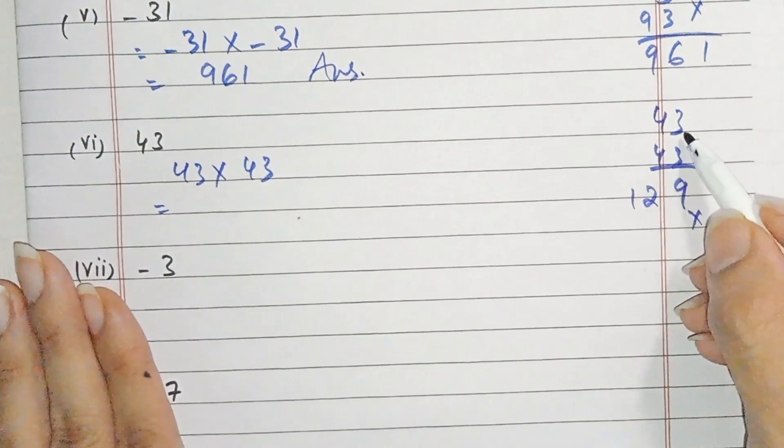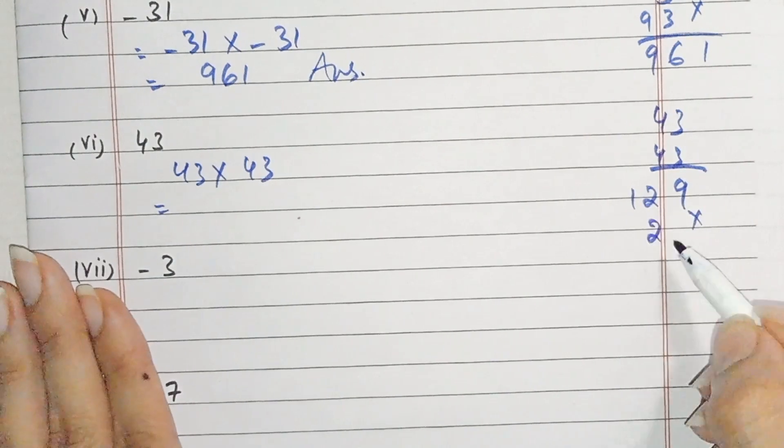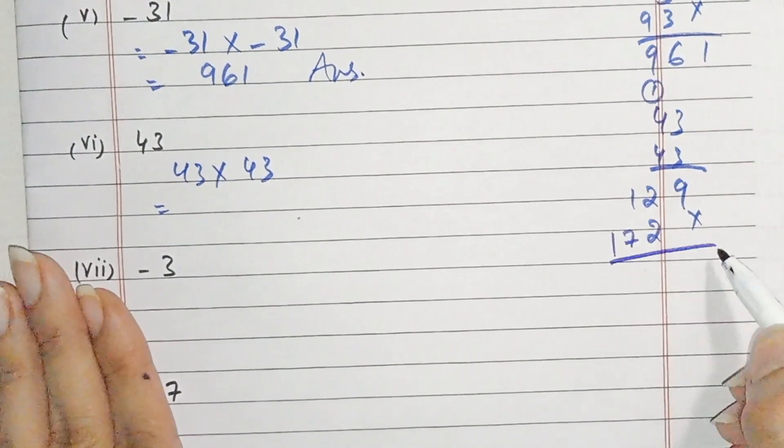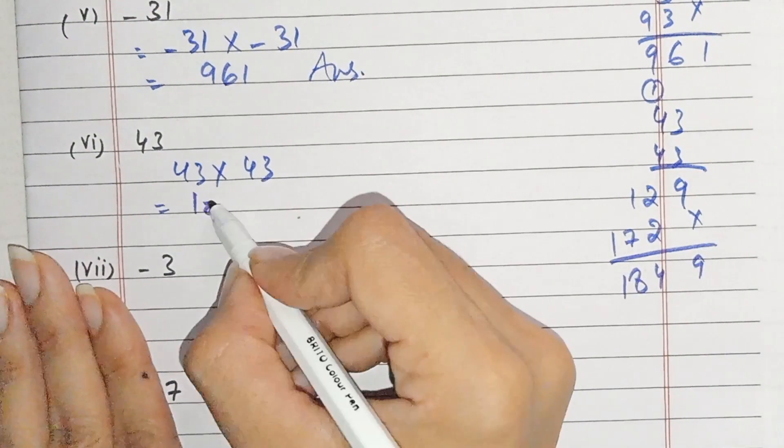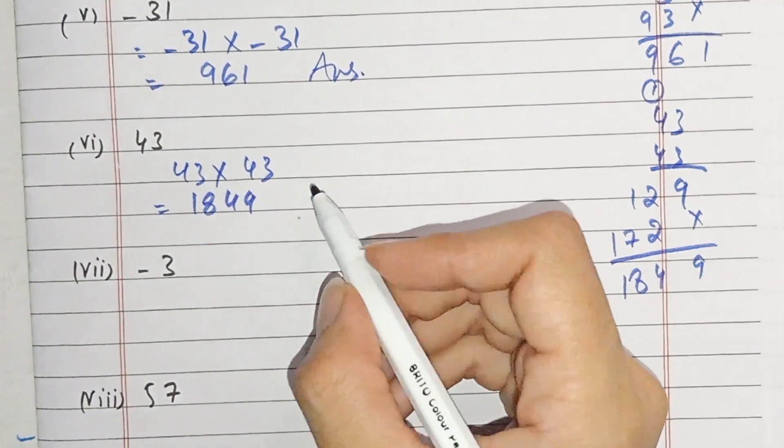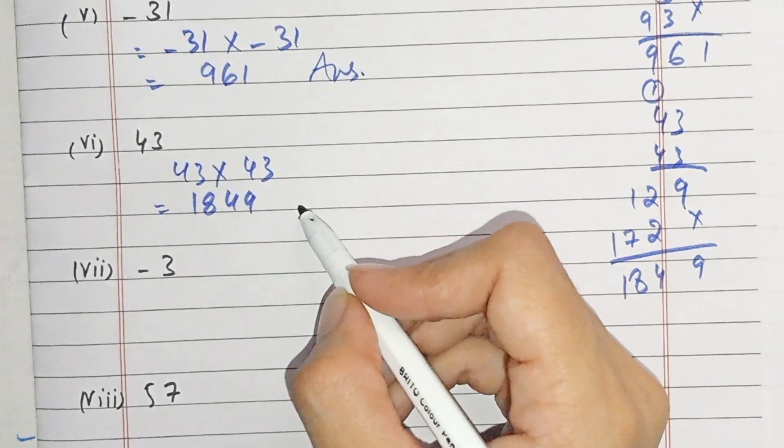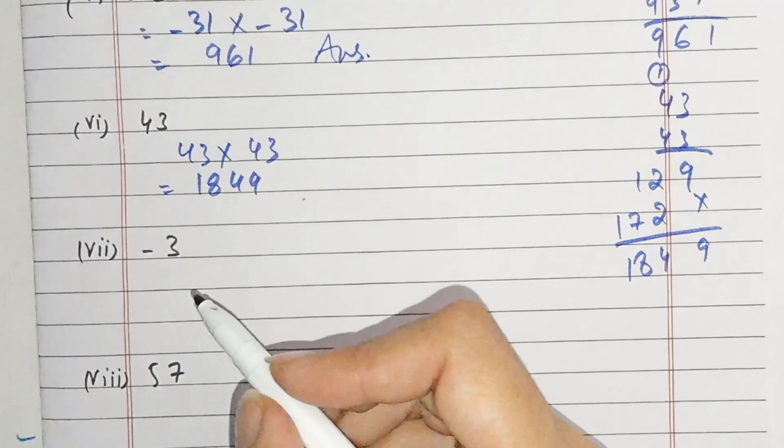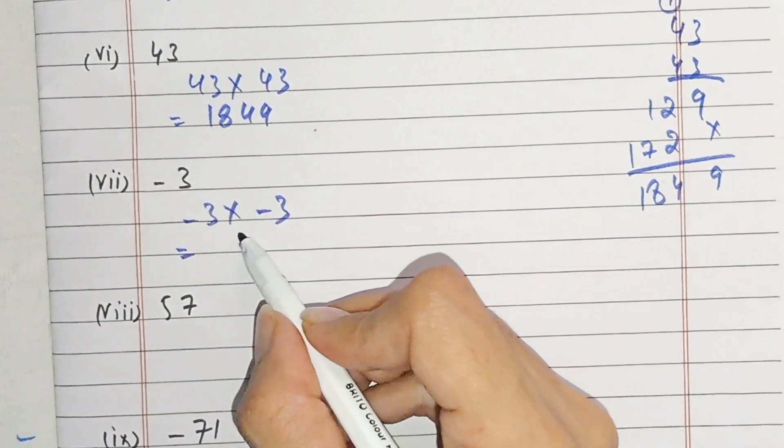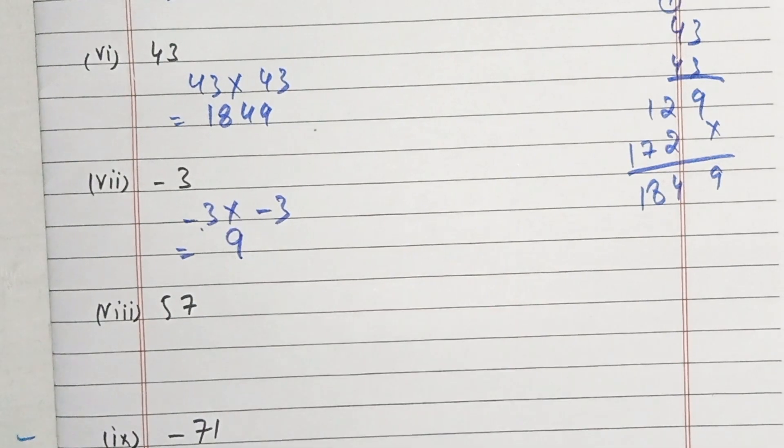Next part, 43 times 43. 3 times 3 equals 9, carrying the 1, 16 and 1 equals 17. Either I give one 1849.